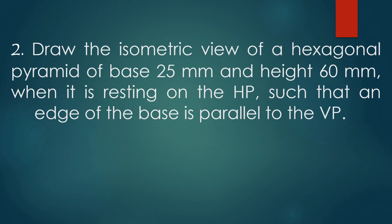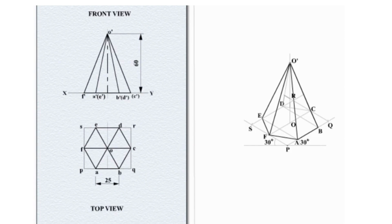So we need to draw the isometric view of a hexagonal pyramid with base side 25mm and axis height 60mm. The position is resting on the HP, which means the base is resting on the HP. So the true shape is visualized in the top view as a hexagon, and the front view will be a triangle.